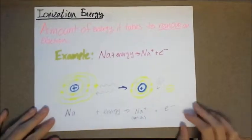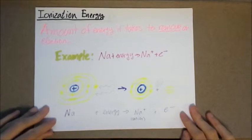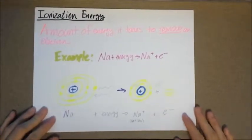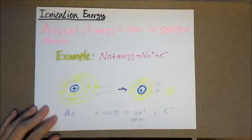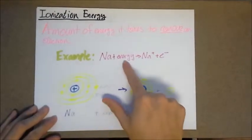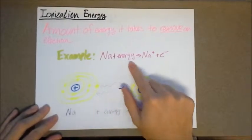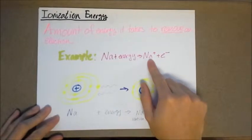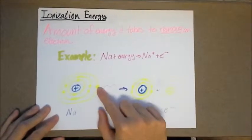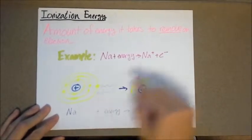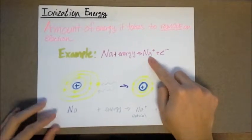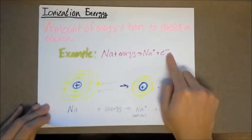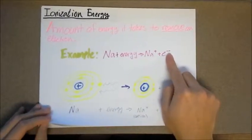The ionization energy is the amount of energy it takes to remove an electron. So if we were to look at a sodium atom in general, if we add some energy in the right way, we can actually remove its one valence electron, creating a positive sodium ion, cation, and a negative electron.